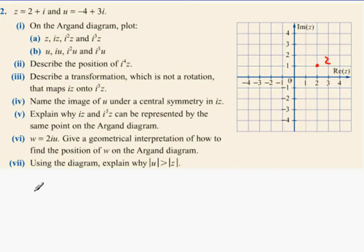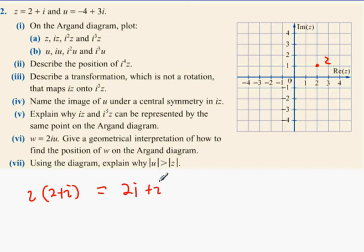Now we have IZ, so IZ equals I multiplied by (2 + i), which is going to be 2i + i², which is going to be -1 + 2i. So -1 + 2i is here, and we can call that IZ.